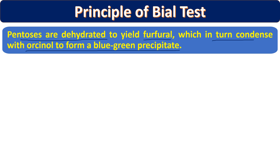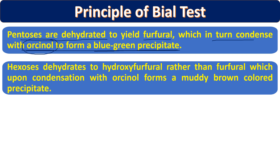Here, the dehydrated furfural reacts with orcinol, not alpha-naphthol. In Molisch's test, if the lab does not have alpha-naphthol, orcinol can be used as a substitute. When dehydration is done with hydrochloric acid (HCl) and the furfural reacts with orcinol, it gives us a blue-green precipitate. Bial's test can be used both qualitatively for detection and quantitatively for measurement.